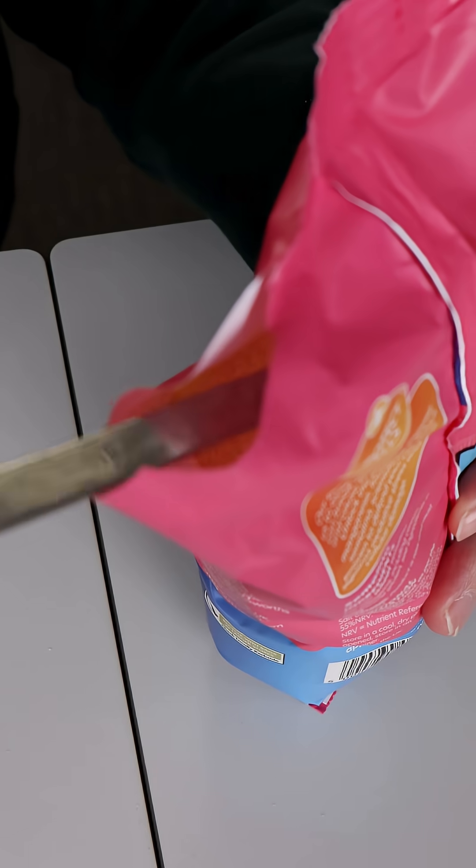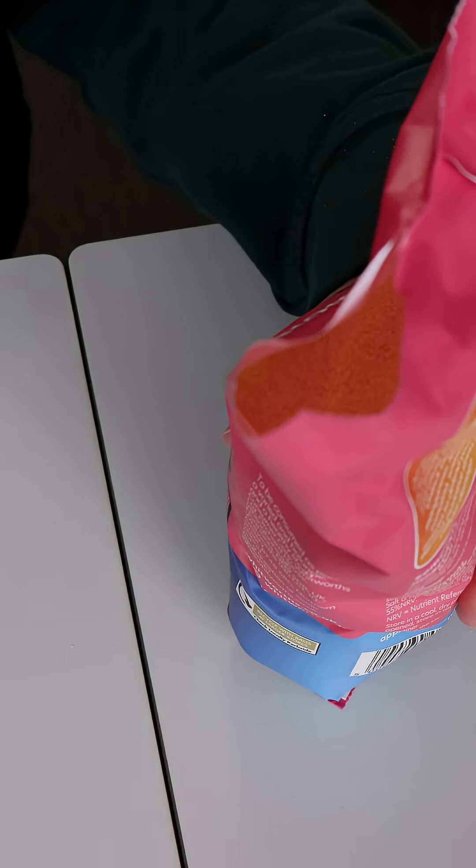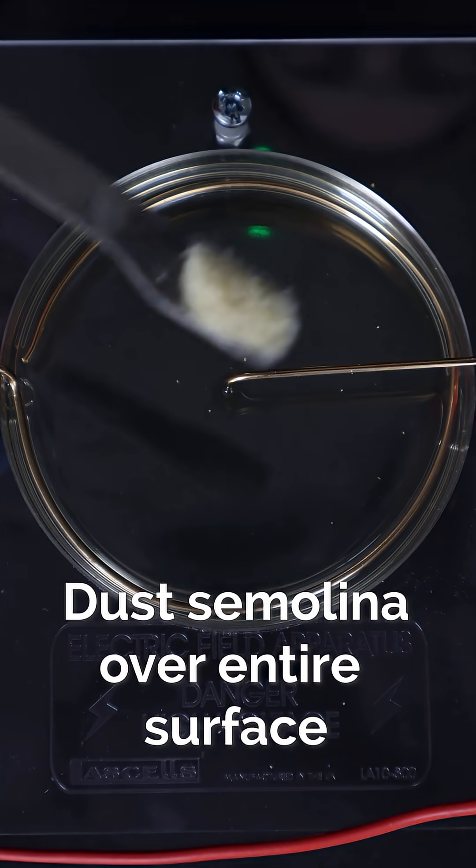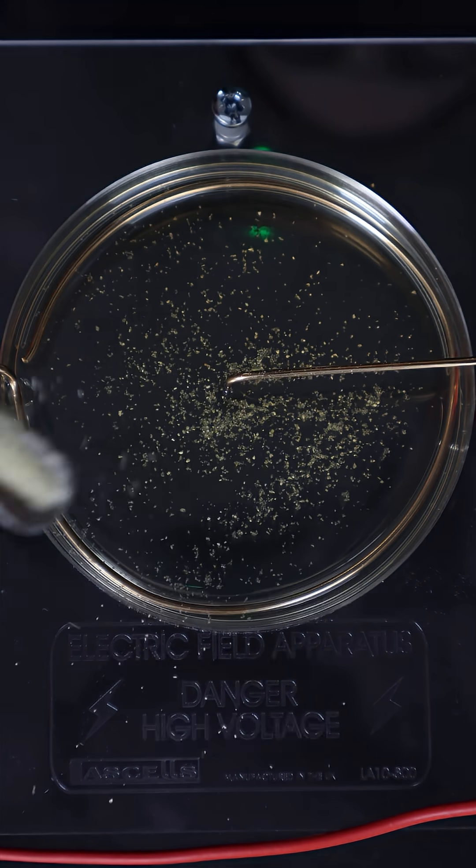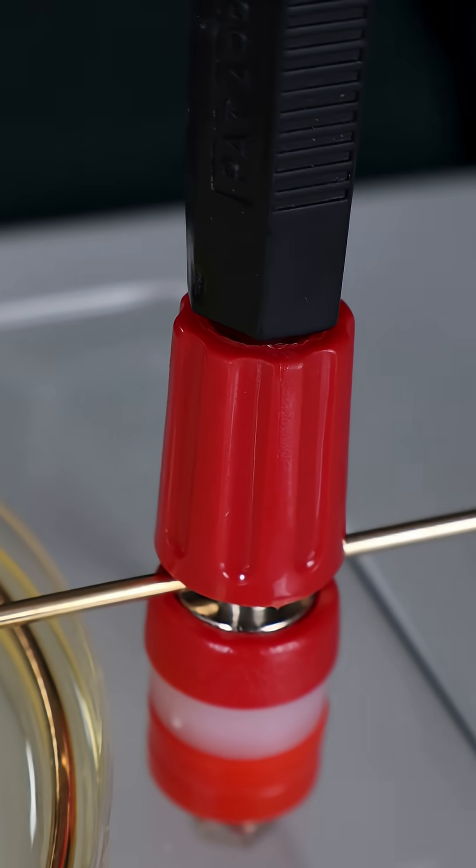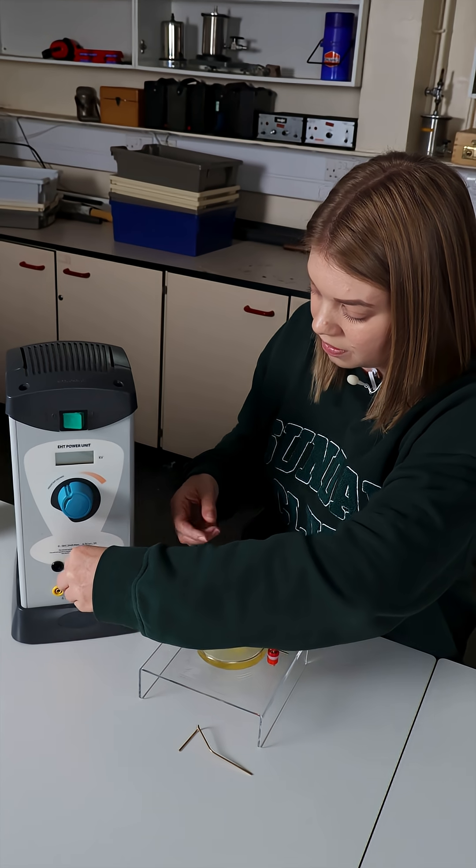Then sprinkle a thin layer of semolina powder or grass seeds over the oil. Now connect the terminal post to the EHT supply, which is set to about two kilovolts.